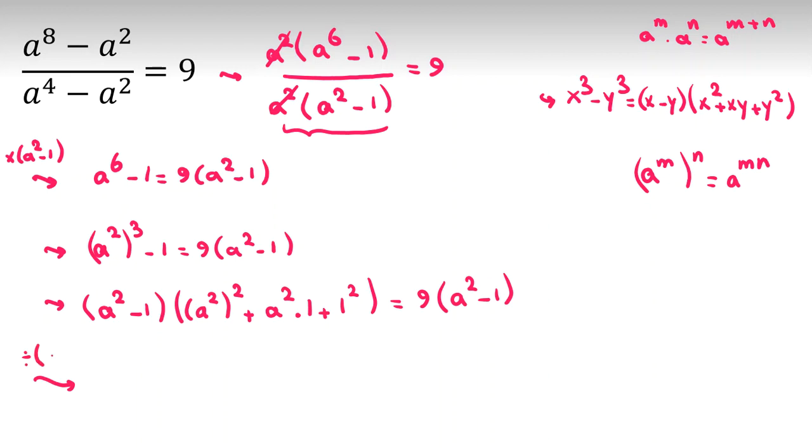We divide both sides by a squared minus 1. We cancel these two terms. a to the 4 plus a squared plus 1 equals 9.